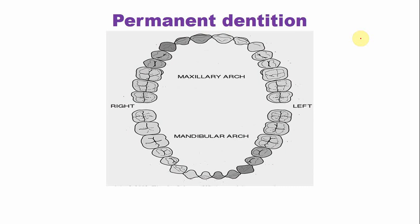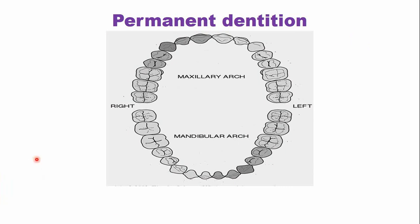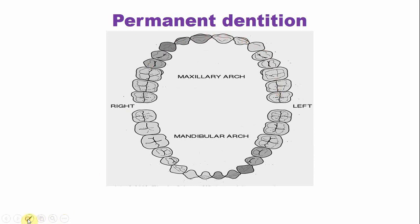Now moving to the permanent dentition. This is the picture of the permanent dentition. Counting the teeth: there are 8 in each half — 8 in this half and 8 in the other — so the total number of teeth in the maxillary arch is 16.